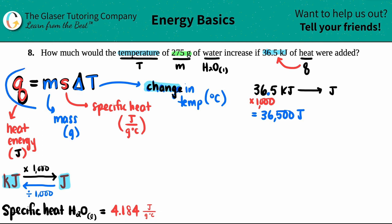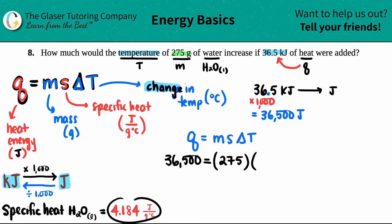Okay. So Q equals M S delta T. My Q is 36,500. I don't put the units because if I know that I have the correct unit, I can just plug in the number. So I don't put in my units. My mass has to be in grams. They told us the correct unit, 275. So 275 times the S specific heat. That's the number that was required from your knowledge, or if you're using a table or you looked it up, it's 4.184.